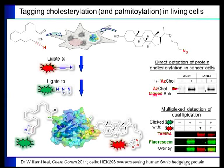On the right I've shown how we can use this to detect sonic hedgehog cholesterolation inside cancer cell lines that overexpress sonic hedgehog, useful for actual detection of cholesterolation in those cells. In the multiplex detection shown in the bottom right, Tamra shows us the cholesterol modification while fluorescein shows us the palmitate modification, and we can show the overlay in the same cells to look at the interplay between these two types of modification.